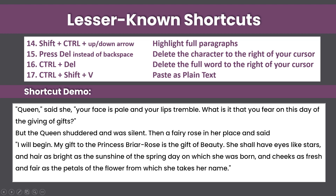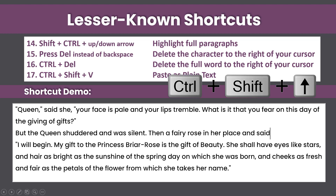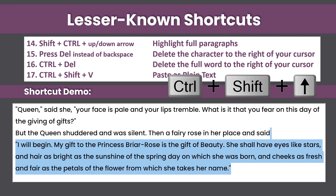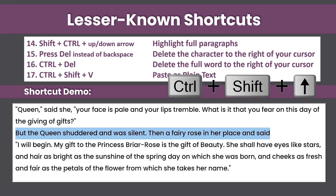The next lesser-known shortcut is Shift+Ctrl plus the up or down arrow, and what this does is highlight full paragraphs. If I put my cursor at the end of a word and hold down Shift and Ctrl and press the up arrow, you can see it highlights that full paragraph. Pressing down highlights the paragraph below, and I can keep going up or down, highlighting paragraph after paragraph in either direction.